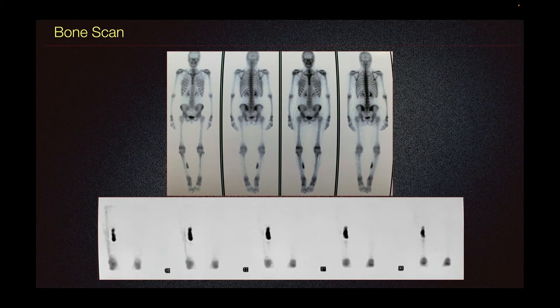In bone scan, there is typically nonspecific increased uptake on flow and blood pool images in the early development of myositis ossificans, and it gradually decreases as the lesion matures. This is not, however, a routine imaging modality done for patients with myositis ossificans.